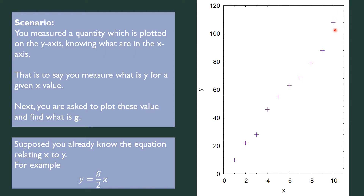You have all these data points and you want to determine what G is. If you know how to process this data, you will immediately know that you find G based on the slope of the graph. Basically you have a linear line, you find the slope of the graph, and from that slope you find G. But like I mentioned, what is the best fit line? Some people use a centroid and try to adjust to find the best fit line, but this is not the best way.